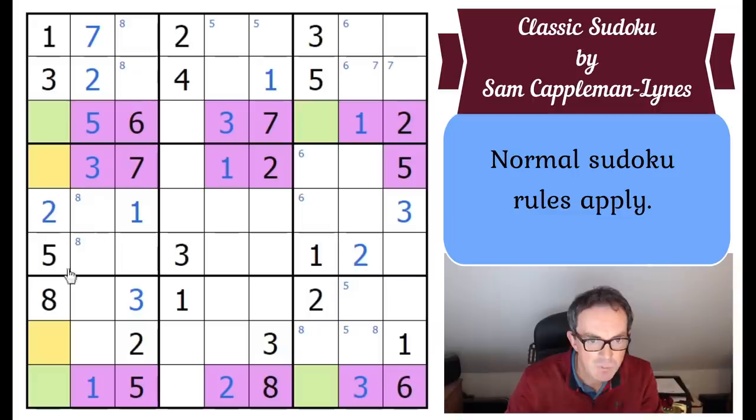Well we can't possibly have a four in any of those yellow squares. Because we know that either this square or this square is a four in column one. And either this square or this square is a four in column seven. So there are no more fours possible. We can eliminate fours from all of these squares. And look. This is absolutely beautiful. Because of the purple highlighting.